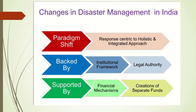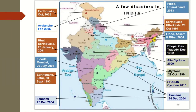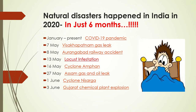Now, there have been changes in disaster management in India in terms of its approach, authorities, and finance — all of which we will be studying in this subject. This is a brief pictorial view of various disasters that have happened in India. Talking about the current year, in just six months we have faced so many natural disasters and the situation is very dangerous.